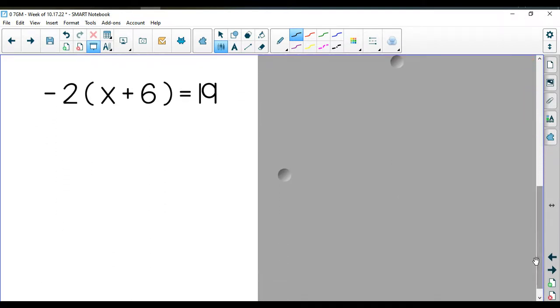For the next example I have for you, it's right here. We have negative 2, parentheses, x plus 6, close up your parentheses, is equal to 19. Go ahead, write this one down, drop the line down your equal sign, and solve.